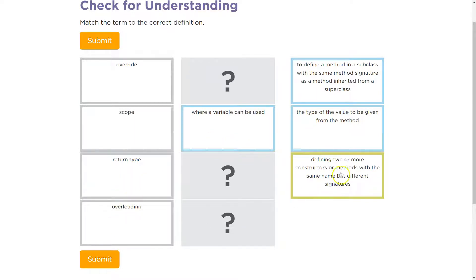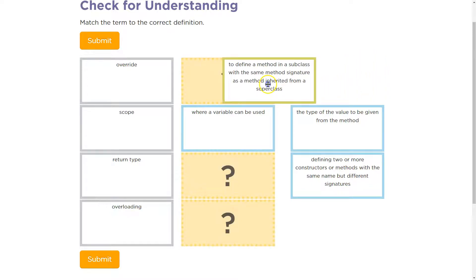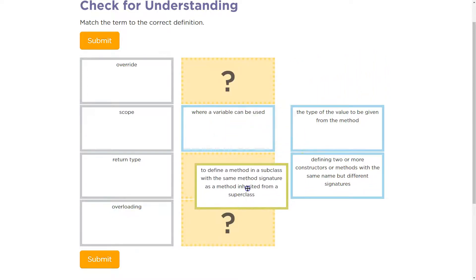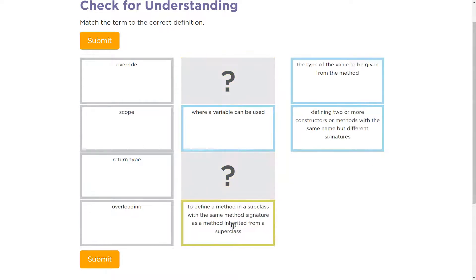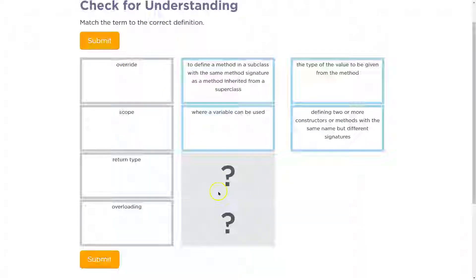To define a method in a subclass with the same method signature, right? With the same name and stuff - that's what a method signature is, a fancy way of saying that. So that would be override.